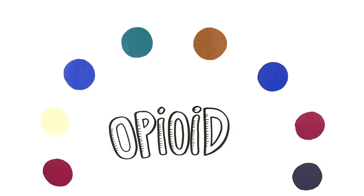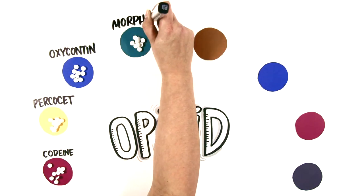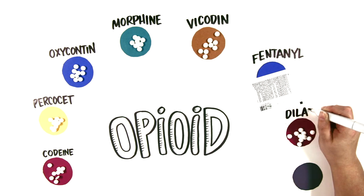Now, an opioid is a pain reliever. Some examples include medications that you may have heard of, like codeine, Percocet, Oxycontin, Morphine, Vicodin, Duregesic, or the Fentanyl patch, Dilaudid, and others.